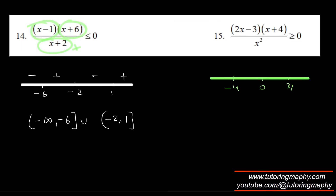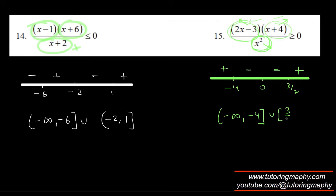For the next inequality, the roots are negative four, zero, and three over two — zero from the x factor, three over two from the linear factor, and negative four from the other factor. The x-squared factor is always positive so we ignore it for sign analysis. Testing regions: greater than three over two is positive; between zero and three over two is negative; between negative four and zero is negative; less than negative four is positive. We want greater than or equal to zero, so the answer is negative infinity to negative four (included) union three over two to infinity (included).